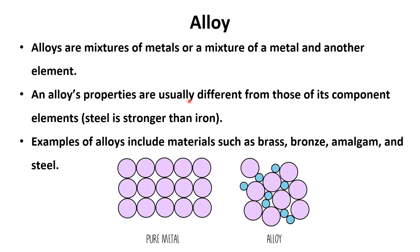The properties of alloys are usually different from those of their component elements. For example, steel is an alloy of iron, but steel is stronger than iron. Examples of alloys include brass, bronze, amalgam, and steel.